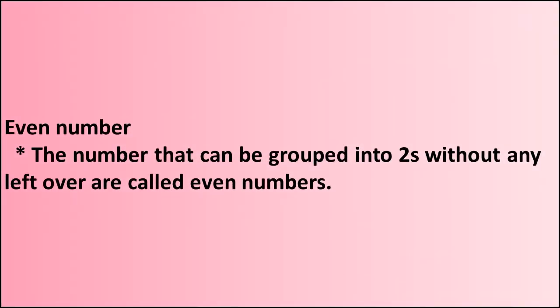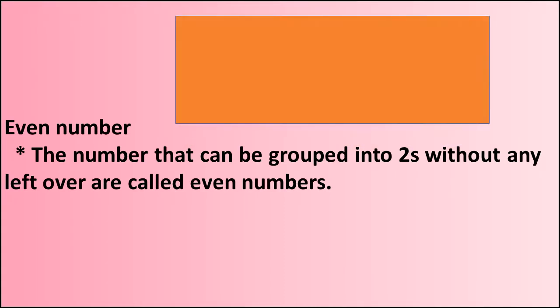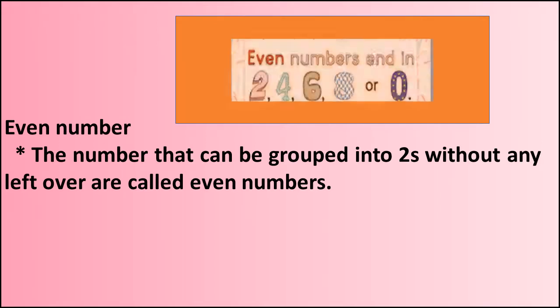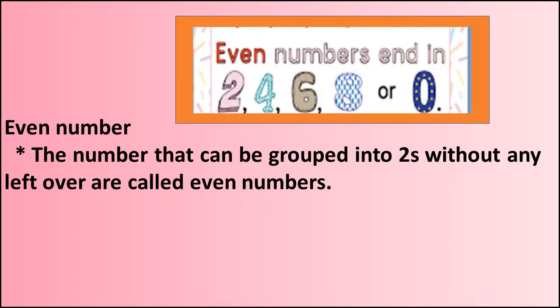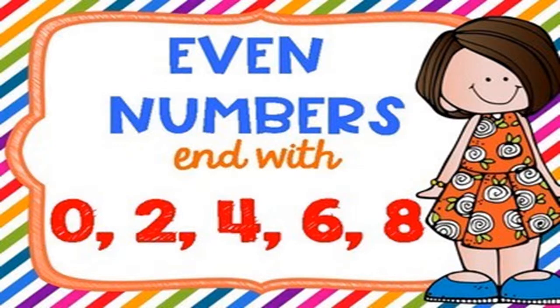Dear students, let me see what are the even numbers. The numbers that can be grouped into twos without any left over are called even numbers. You have to remember that even numbers always end at two, four, six, eight, or zero. So this is the key point that you have to remember that even numbers also end with zero, two, four, six, and eight.